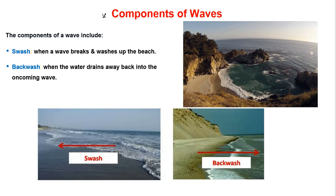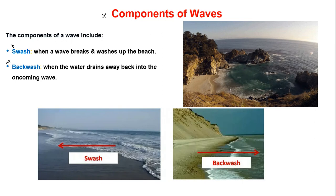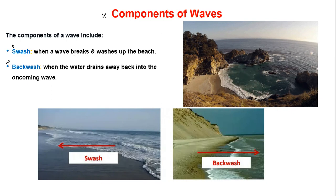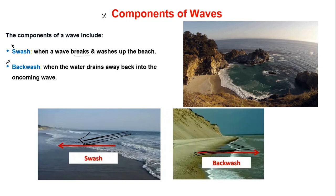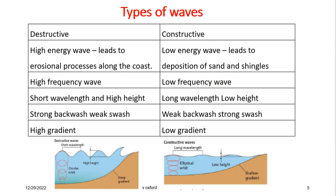Now let's look at the components of a wave. There are two major components you need to know: the swash and the backwash. The swash is when a wave moves up the beach, or washes materials up the beach, as you can see from this image. The water that drains back into the sea is called the backwash. So those are the two components.